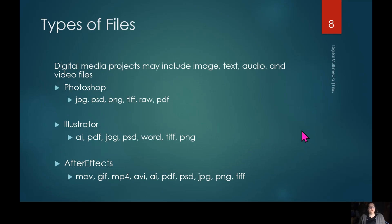The different types of files you use in a digital media project can include images, text, audio, and video. In Photoshop you're most likely going to be using files like JPEGs, PSDs, PNGs, TIFFs, RAWs, and PDFs. In Illustrator you'll be using AIs, PDFs, JPEGs, PSDs, words, TIFFs, and PNGs. After Effects uses MOVs, GIFs, MP4s, AVIs, AI, PDF, PSD, JPEG, PNG, and TIFF. What's really nice about Adobe programs is they've been created so you can use other Adobe files within them and combine programs.